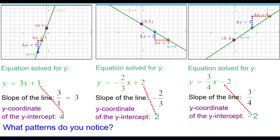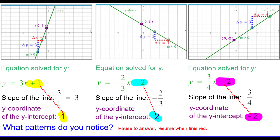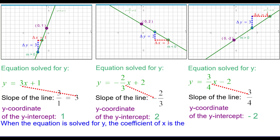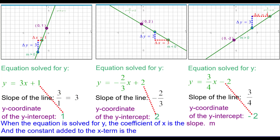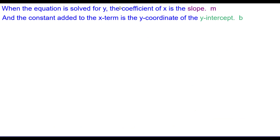What about the y-coordinate of the y-intercept? It turns out the y-intercept is the constant added to the x term in each case — in one case we're adding a negative 2, which is the same as subtracting positive 2. So when the equation is solved for y, the coefficient of x is the slope, abbreviated m, and the constant added to the x term is the y-coordinate of the y-intercept, designated lowercase b.